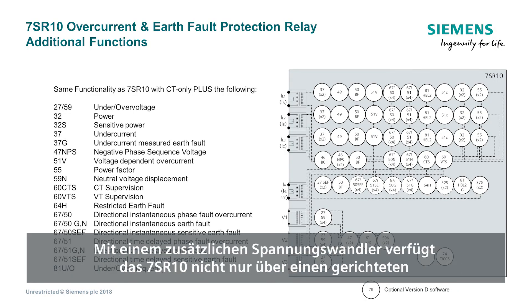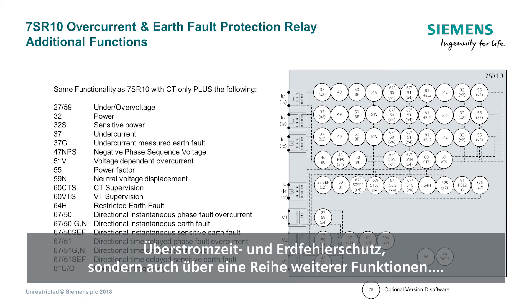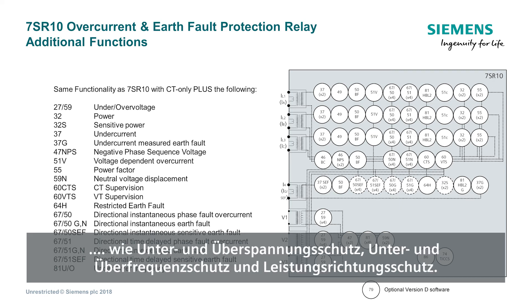With the addition of voltage transformers, the 7SR10 not only provides directional overcurrent and earth fault, but a number of additional functions. These include under and over voltage, under and over frequency and directional power protection.